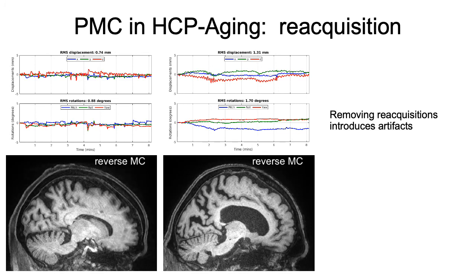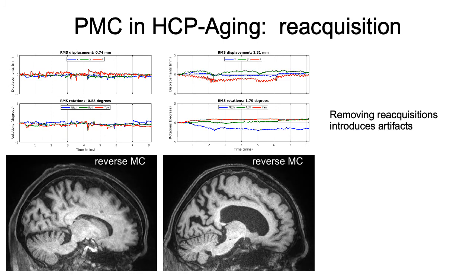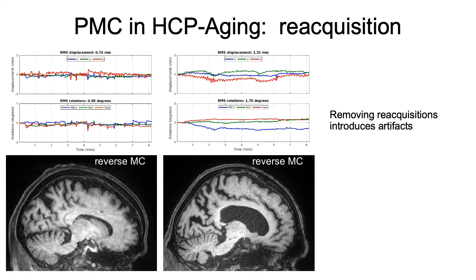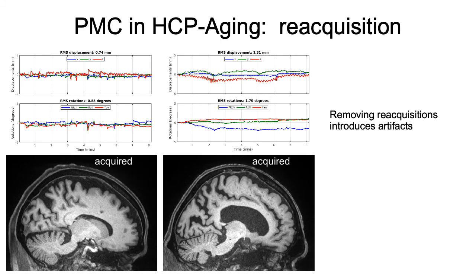These examples show the benefit of selective reacquisition. As we go from the acquired image to the image without reacquisition, we see artifacts being introduced, demonstrating the value of having a period at the end of the scan for reacquiring the TRs with the most motion.